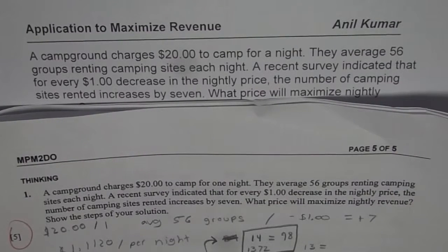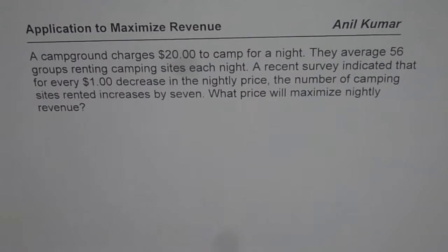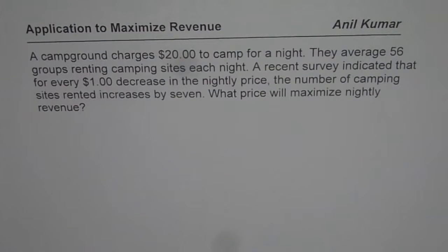I'm Anil Kumar and here is a thinking and application question from a test paper. The question is: a campground charges $1.20 to camp for a night. They average 56 groups renting camping sites each night. A recent survey indicates that every $1 decrease in nightly price, the number of camping sites rented increased by 7. Question 1: what price will maximize nightly revenue?